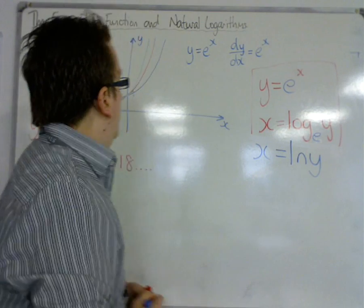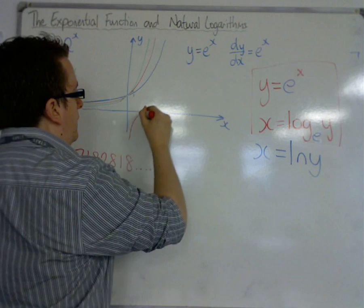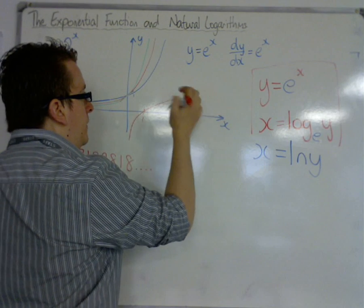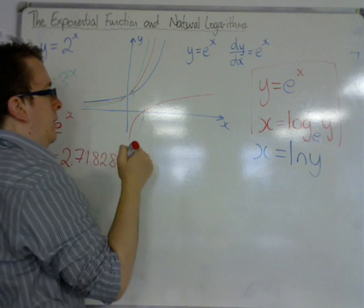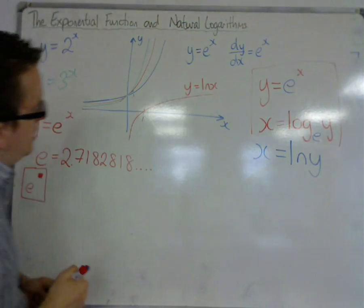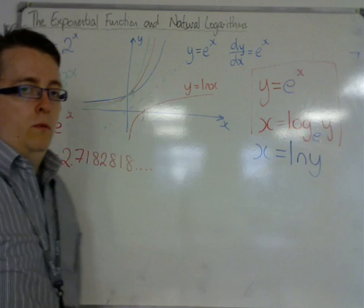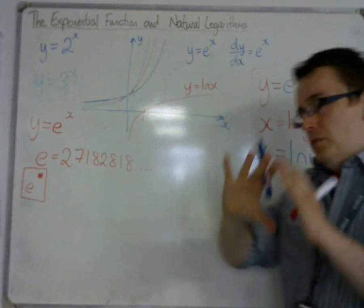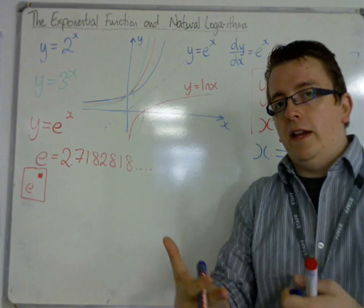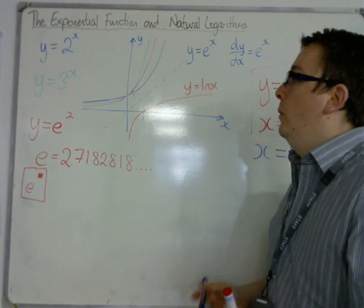y equals ln x looks like a curve passing through (1, 0) on the x-axis and steadily increasing, but never reaching the y-axis. You might notice there's a symmetry between y equals e to the x and y equals ln x either side of the line y equals x — that's because they are inverse functions of one another, and that's a property of inverse functions which we will look at later.